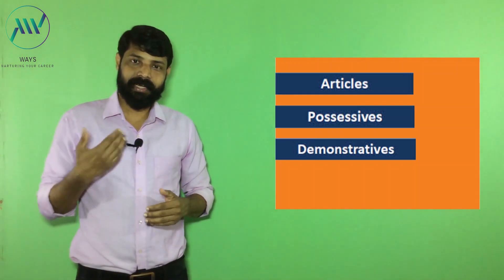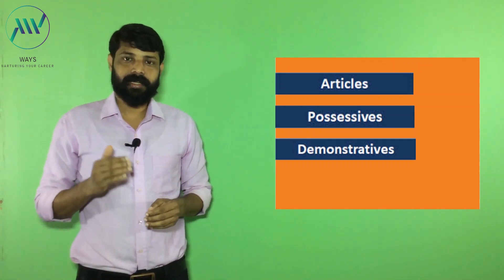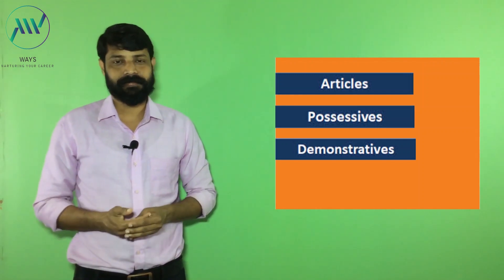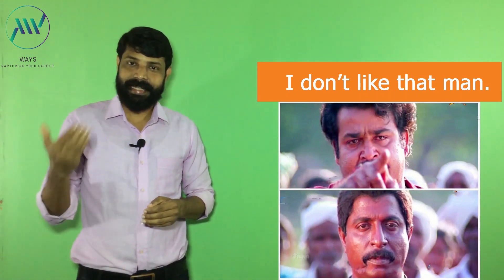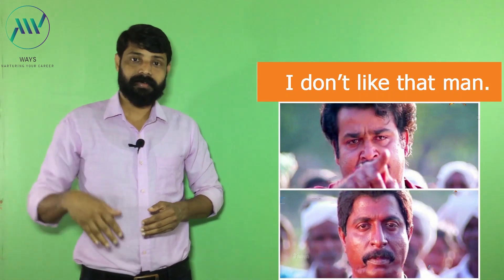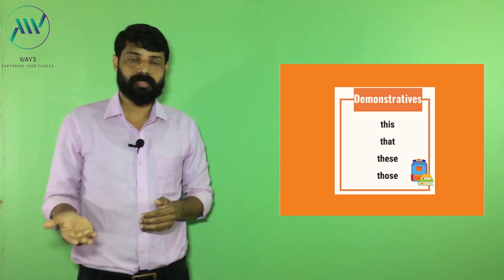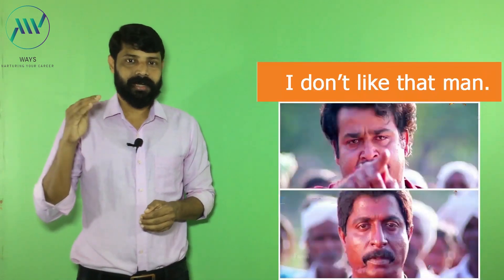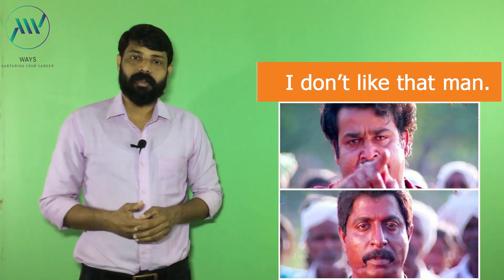Third one: demonstrative determinants. Demonstrative determinants demonstrate and function as pointers of a particular noun. Basically, demonstrative determinants indicate the location or position of a noun from the point of view of the speaker. See that example: 'I don't like that man.' In this example, the word 'that' is a demonstrative determiner — here it is used to indicate the location of the noun. We have other examples for demonstrative determinants like that, these, and those. All these are examples for demonstrative determinants, used to indicate the location or position of a noun.